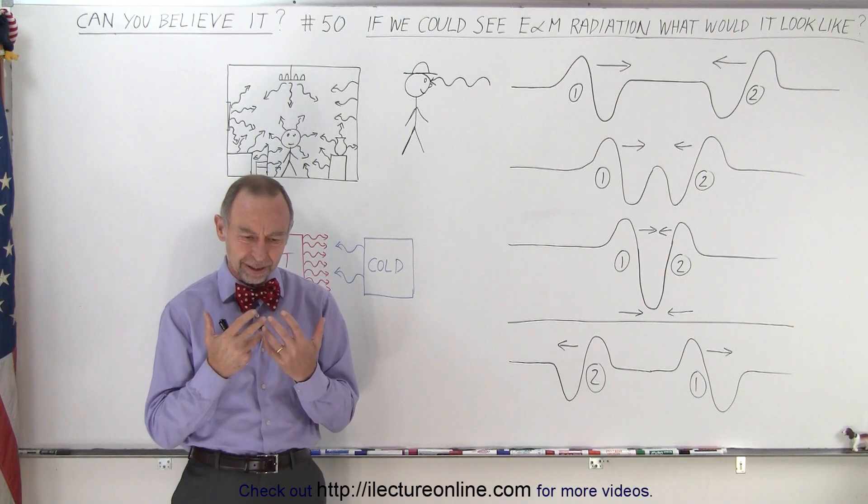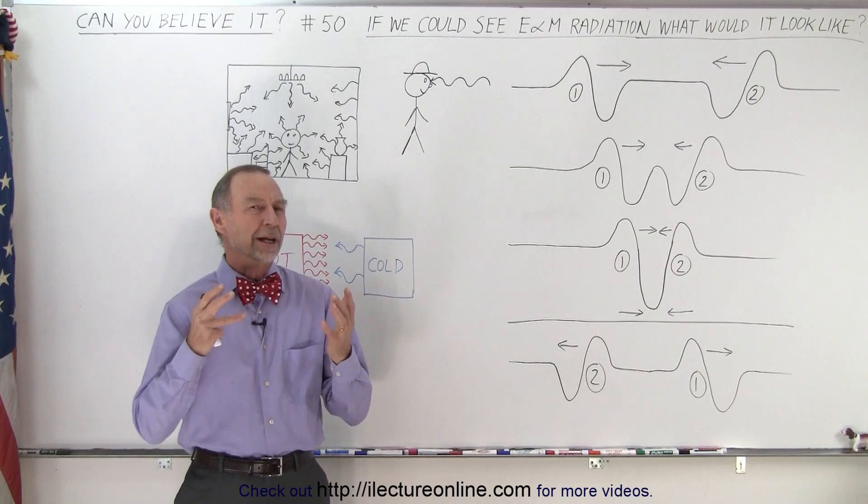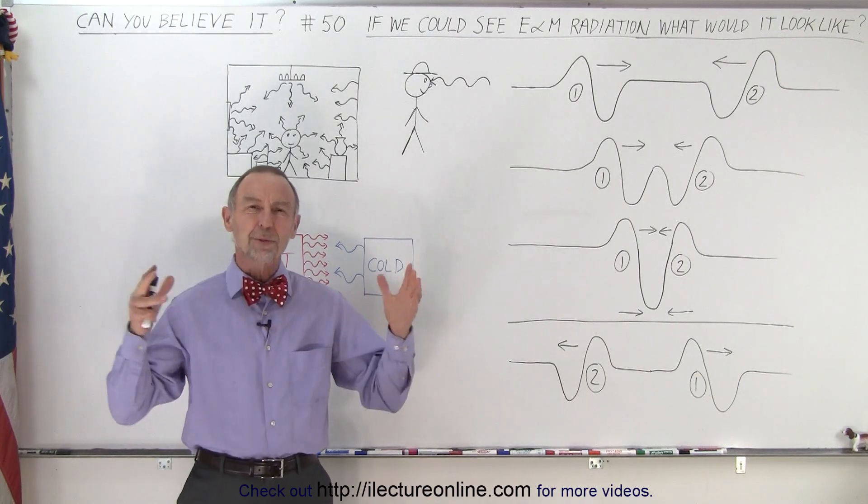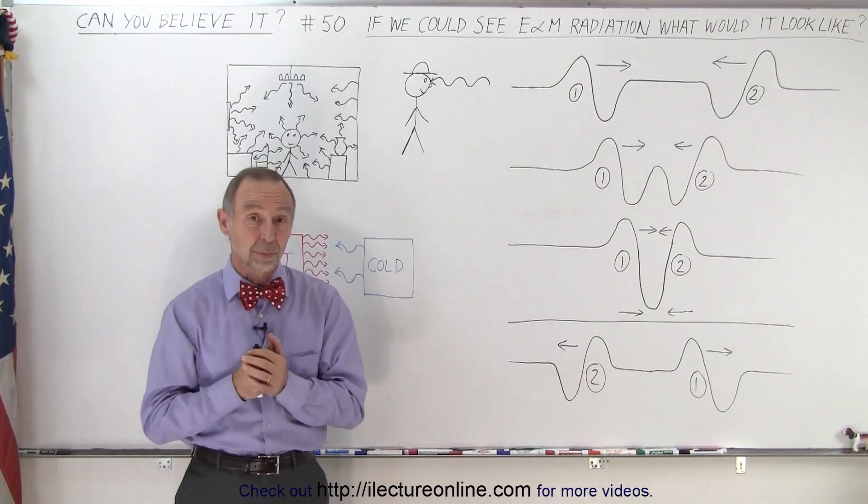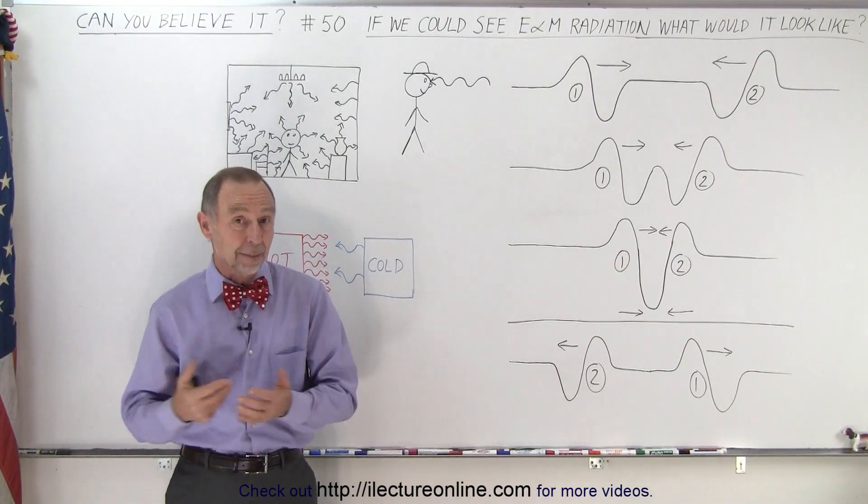And one of the ideas she came up with is she asked the question: what would it look like if we could see all the other forms of the electromagnetic spectrum? What if we could see infrared and ultraviolet, x-ray perhaps?